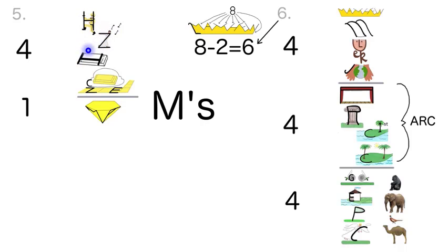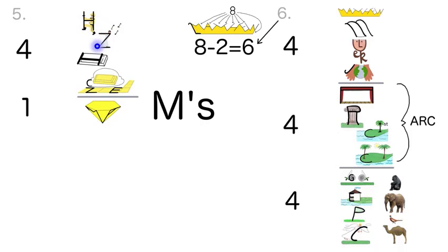Habakkuk, Zephaniah, Haggai, Zechariah, Malachi, Matthew, Mark, Luke, John, Acts, Romans, 1st Corinthians, 2nd Corinthians, Galatians, Ephesians, Philippians, Colossians. Habakkuk, Zephaniah, Haggai, Zechariah, Malachi, Matthew, Mark, Luke, John, Acts, Romans, 1st Corinthians, 2nd Corinthians, Galatians, Ephesians, Philippians, Colossians. Habakkuk, Zephaniah, Haggai, Zechariah, Malachi, Matthew, Mark, Luke, John, Acts, Romans, 1st Corinthians, 2nd Corinthians, Galatians, Ephesians, Philippians, Colossians.